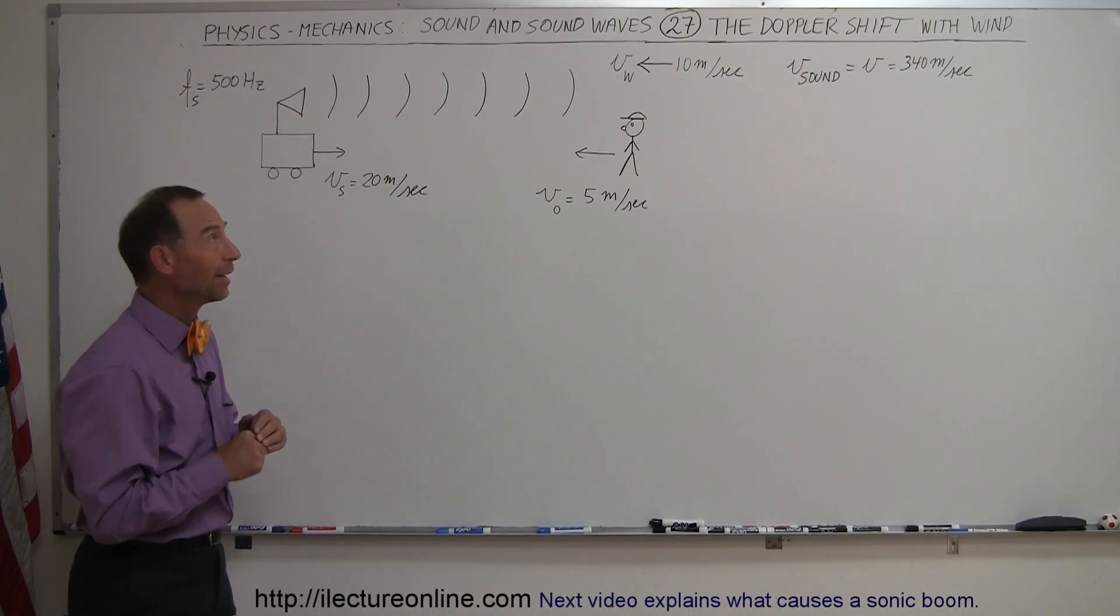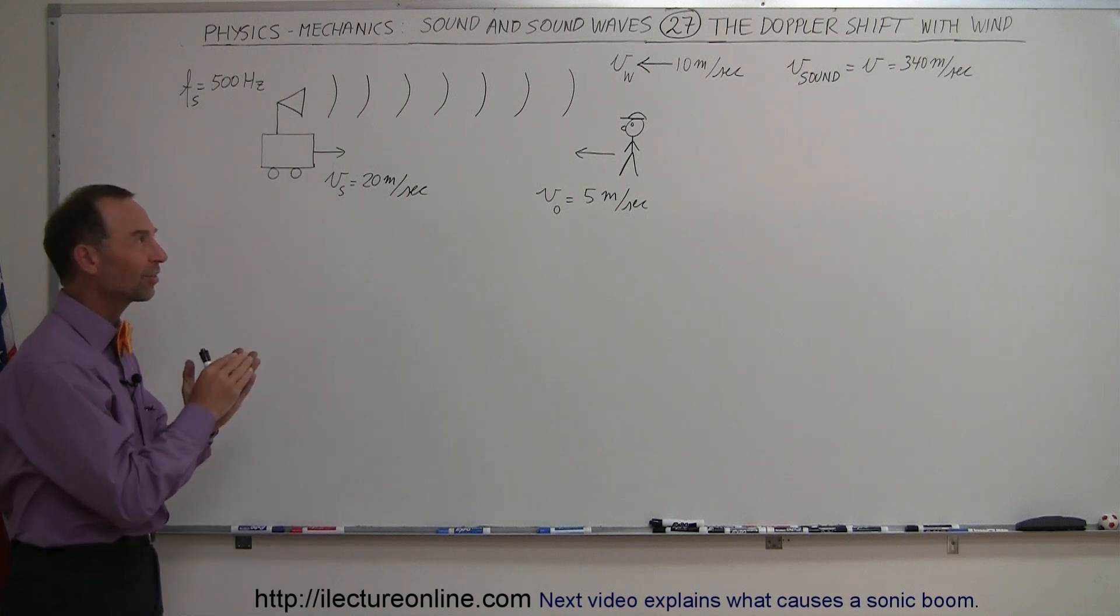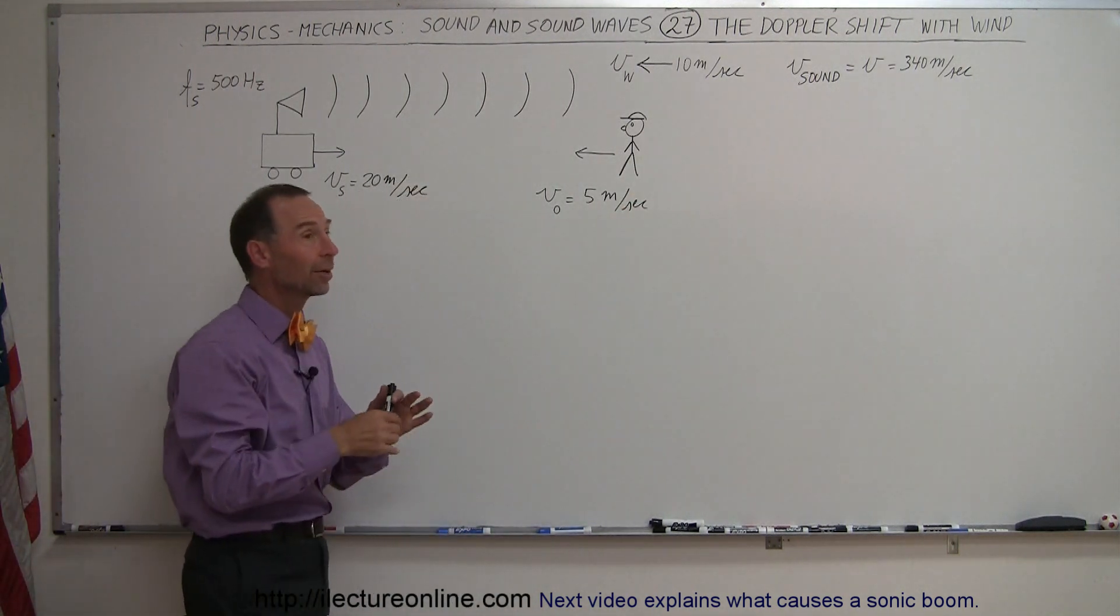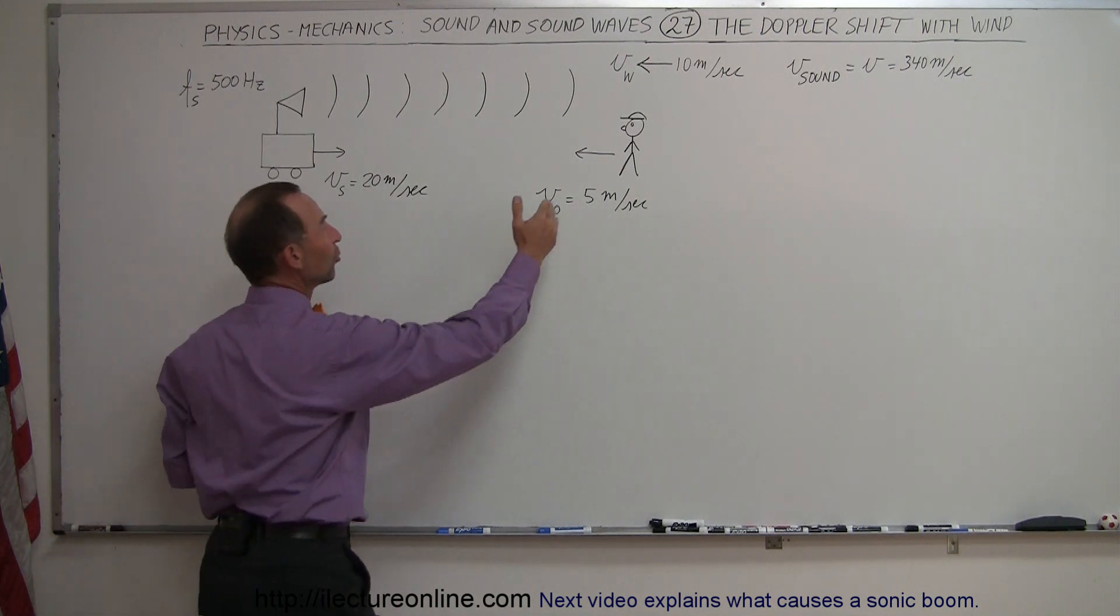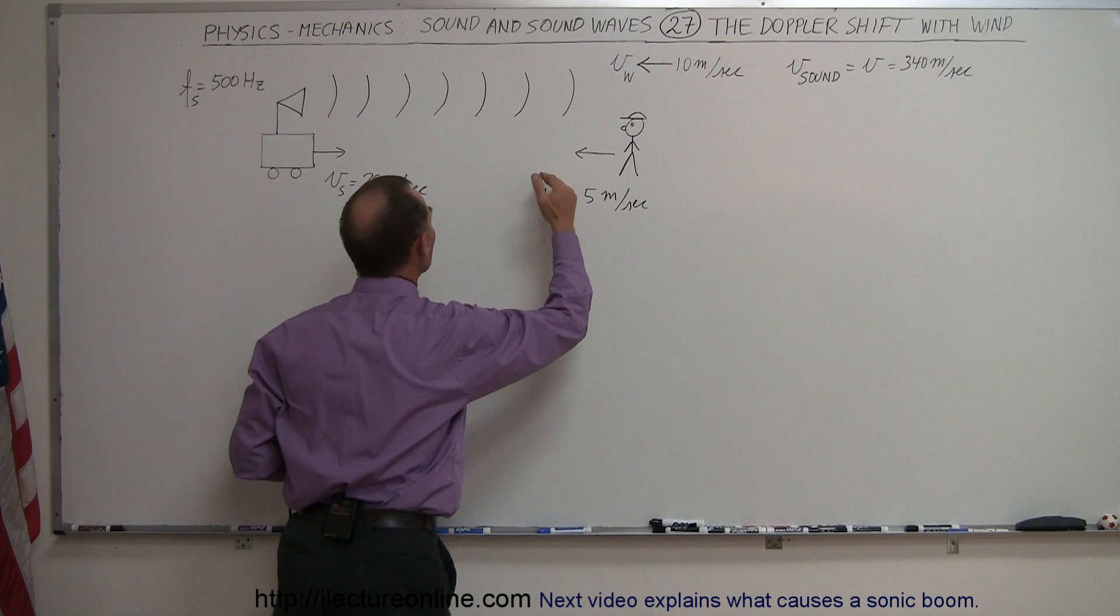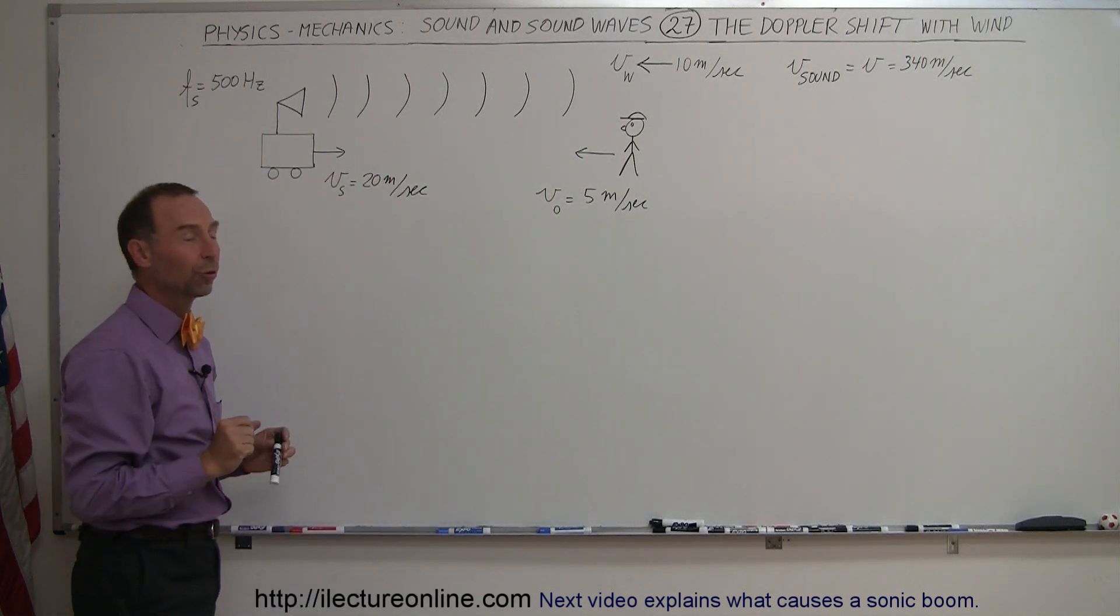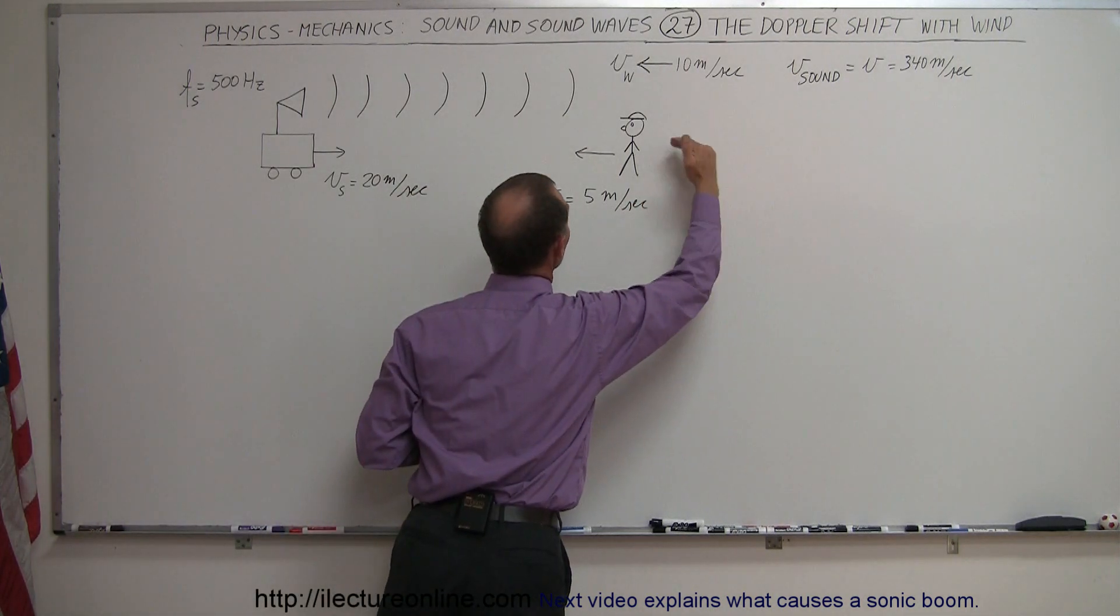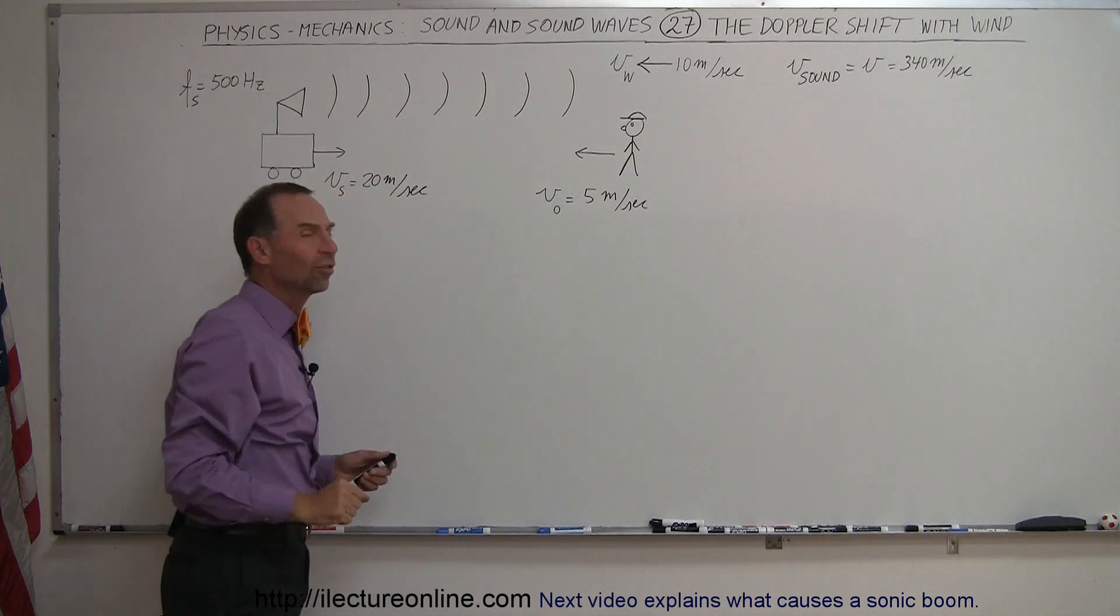Welcome to our lecture online. This next example is almost exactly like the previous example, but in this case we have the wind blowing the opposite direction. We have a source moving at 20 meters per second from left to right, an observer walking towards the source, and the source puts out a frequency of 500 Hertz. What does the observer hear? At the same time, there's a wind blowing in the direction of right to left, blowing against the sound waves coming from the source. How will that affect the frequency heard by this observer?